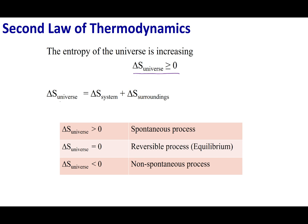Delta S universe is made out of the system and the surroundings. If a process increases the entropy of the universe, the reaction is spontaneous. If it decreases the entropy of the universe, then it is a non-spontaneous process. If it equals zero, the reaction can go in either direction depending on conditions — in other words, we are at equilibrium and doing a reversible process.